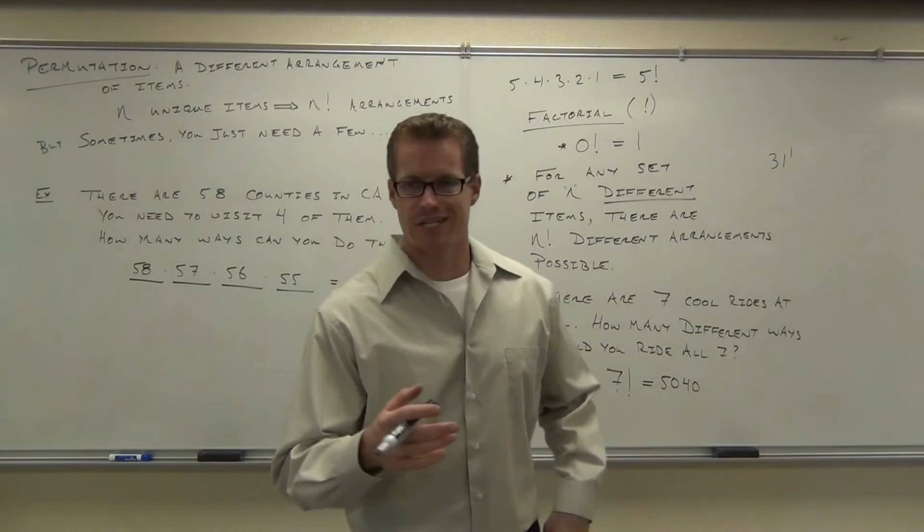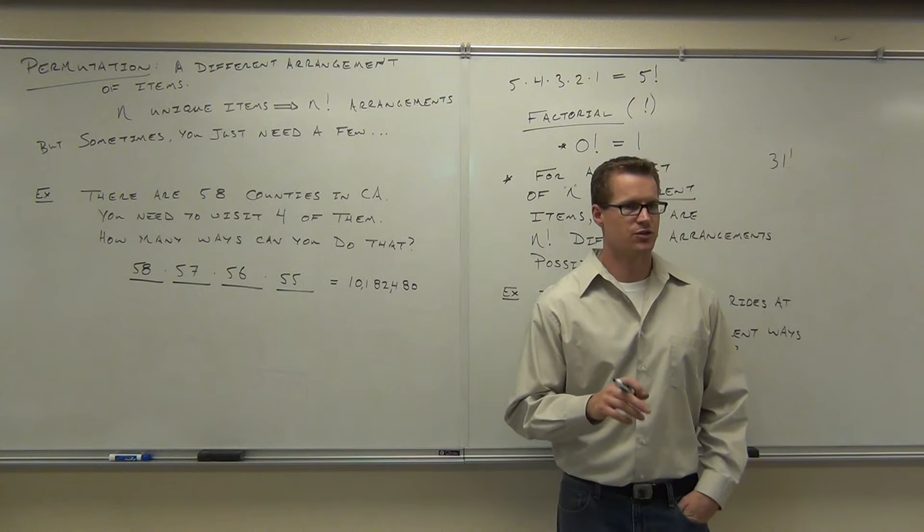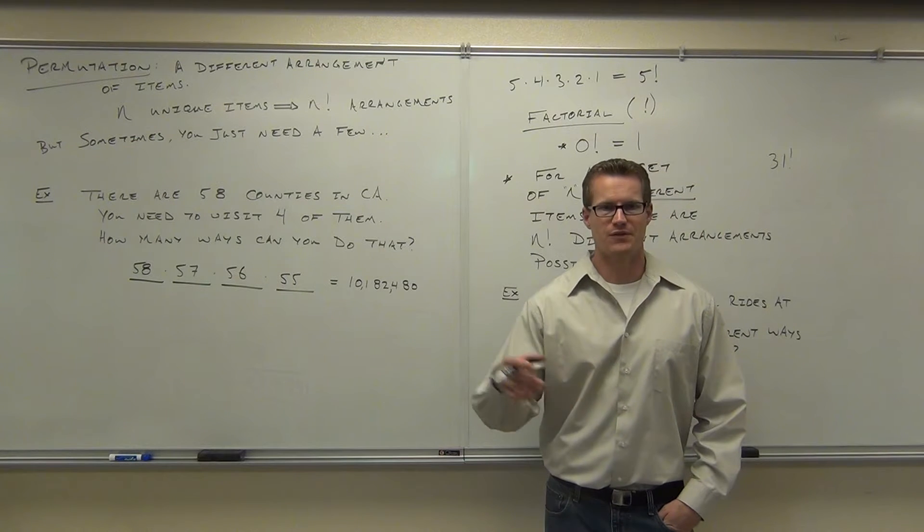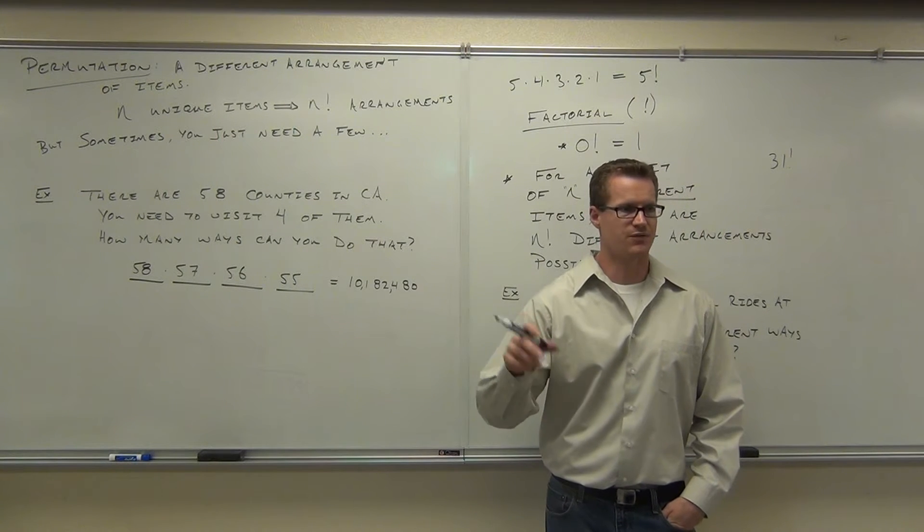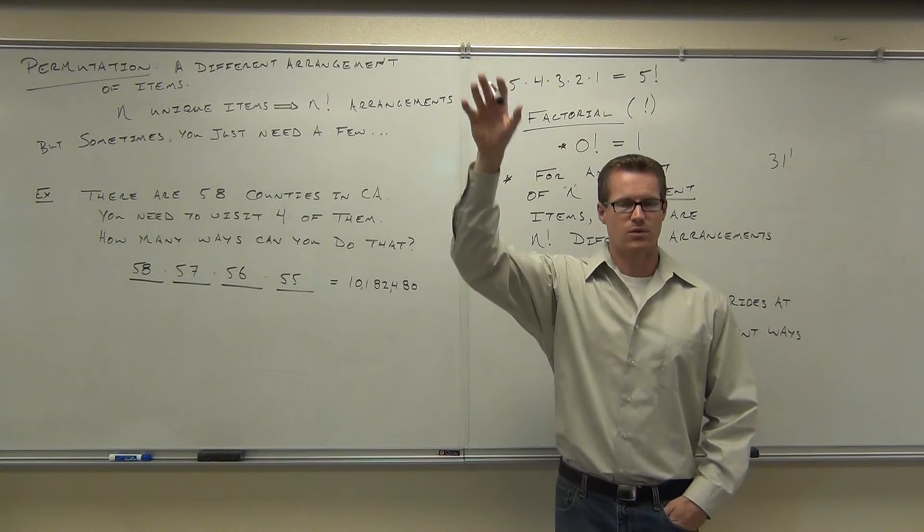Four counties at random, there's 10,182,480 ways you could potentially do that, just visiting four counties. You have 58 for the first choice, 57, 56, and 55 for the last choice. Raise your hand if you understand where those numbers are coming from. Good, okay.